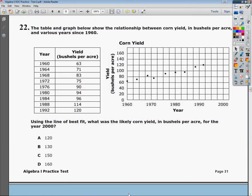Welcome, this is the Algebra 1 End of Course Practice Test 2, question number 22. The question says the table and graph below show a relationship between corn yield in bushels per acre, or sorry, between corn yield—not a field, the yield is in a field—in bushels per acre in various years since 1960.